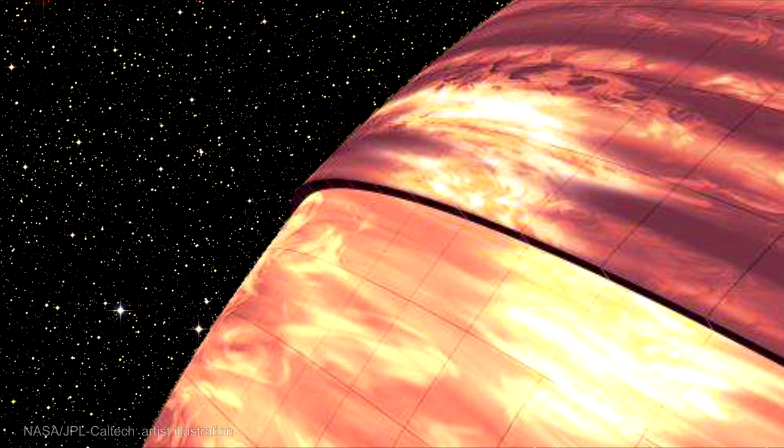We find that brown dwarf atmospheres can be similar to Jupiter's, except that instead of raining ammonia, brown dwarfs rain molten iron droplets.